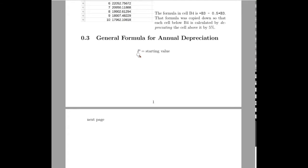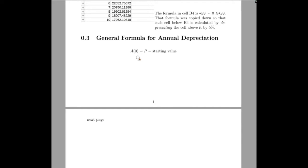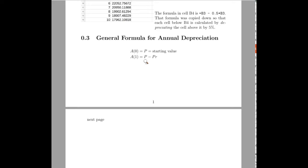So let's develop a general formula for annual depreciation. Let P be the starting value that we're going to depreciate annually. Let A be the function that describes the amount at the end of a particular period. So A(0) is the starting value. At the end of the first year, A(1), we depreciate it by some value R. So P minus P times the rate of depreciation — the annual rate of depreciation as a decimal — would be the value at the end of the first year.